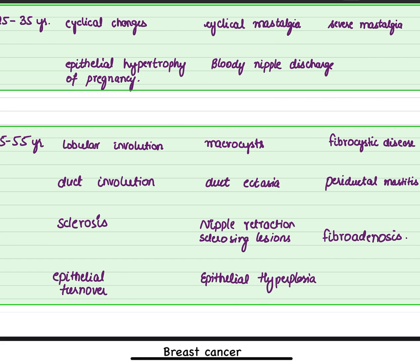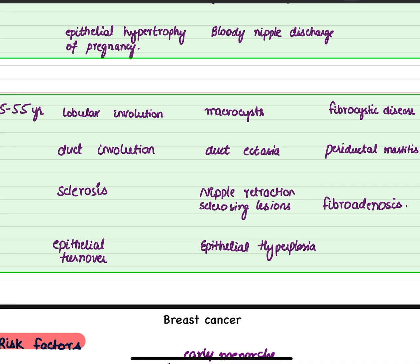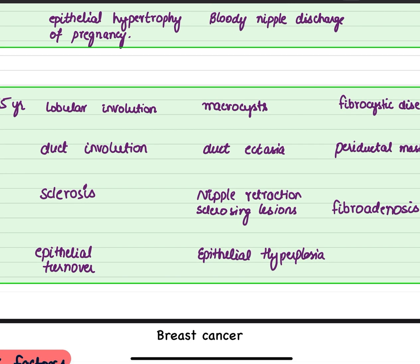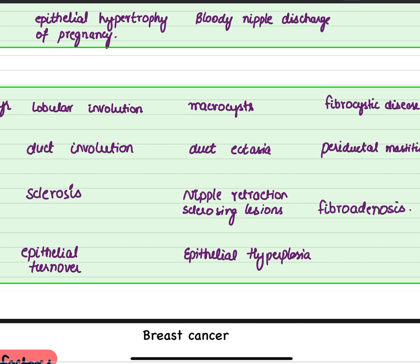Lobular involution may lead to the formation of macrocysts, and the disease pathology is fibrocystic disease. Ductal involution is the same as in the developmental stage and may cause duct ectasia or periductal mastitis. Sclerosis is the reason for nipple retraction and sclerosing lesions, which might result in fibroadenosis.